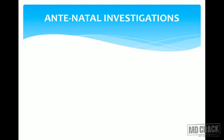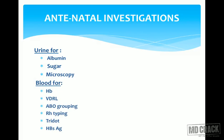Antenatal investigations include urine for albumin, sugar, and microscopy — this is what a routine urine examination means. Blood tests include hemoglobin, VDRL, ABO grouping, RH typing, Tridot, and HBsAg. Tridot is done for HIV testing and HBsAg is done for hepatitis B status. Hemoglobin screens for anemia, VDRL screens for syphilis, and ABO grouping with RH typing checks for RH incompatibility status.